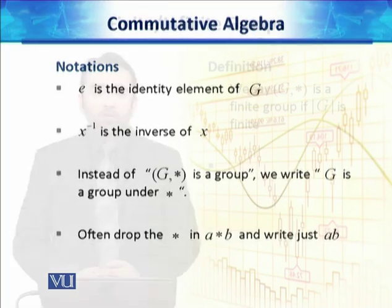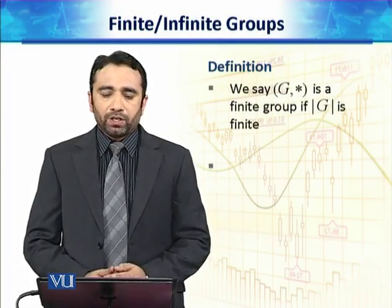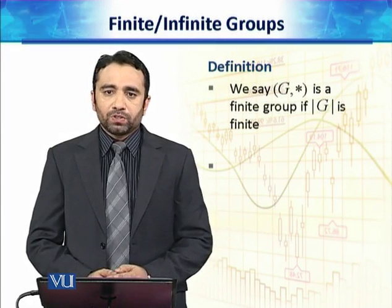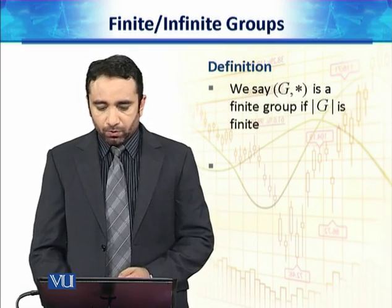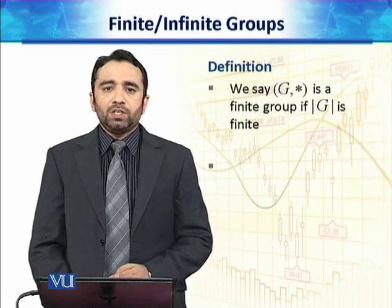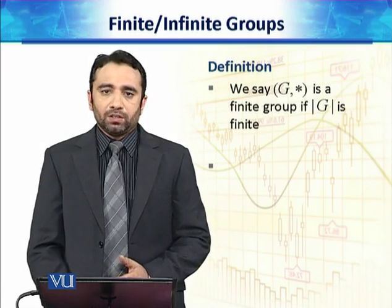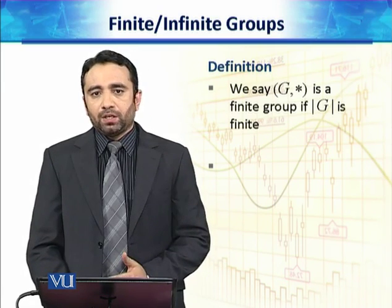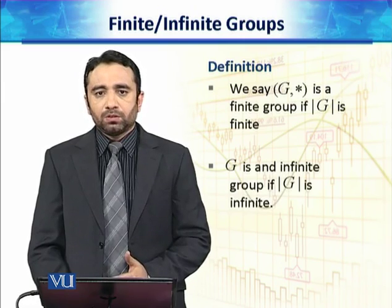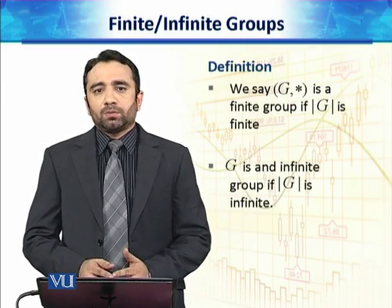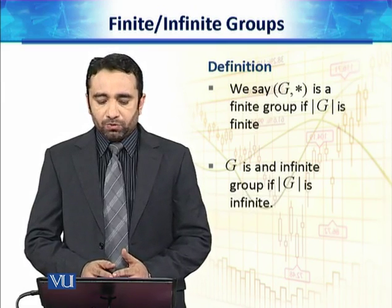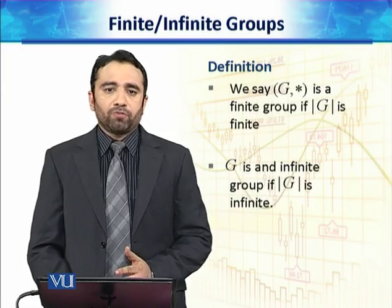Then our definition of finite and infinite groups. We say a group G under the operation star is a finite group if the cardinality, number of elements in that group, is finite. And if the number of elements |G| is equal to infinity or undefined, then we will say that the group is infinite.